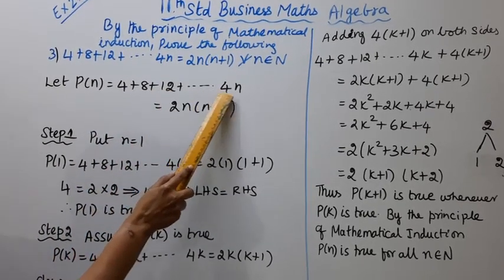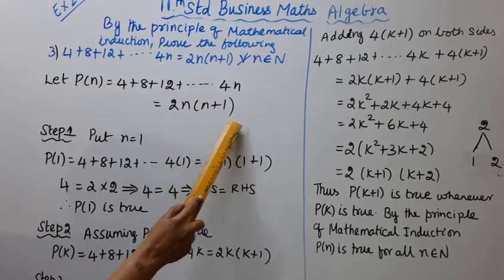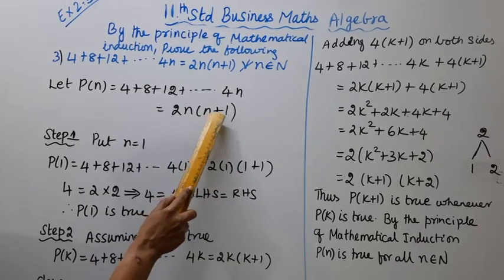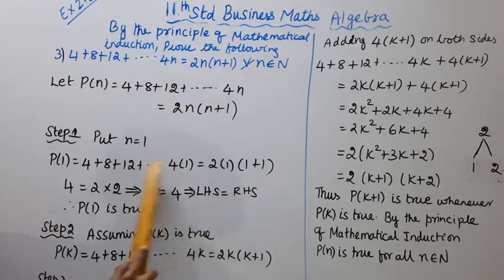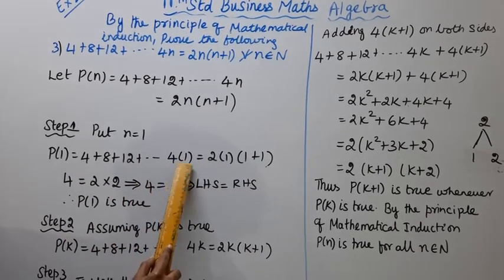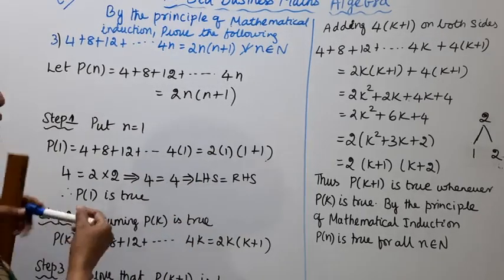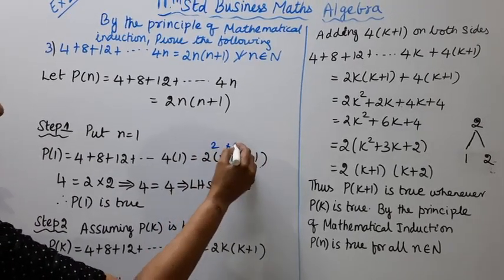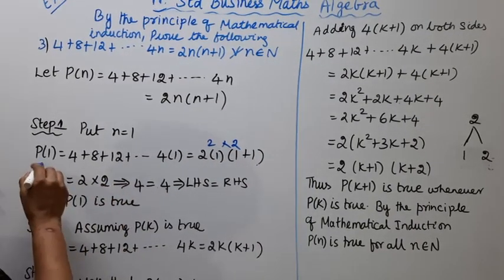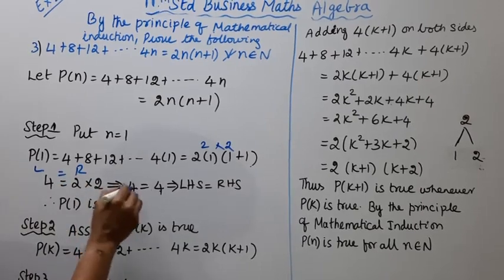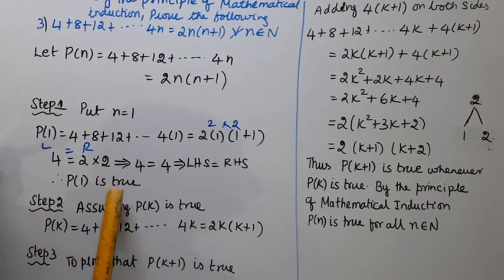4 + 8 + 12 + ... Left hand side is 4 × 1 = 4. Right hand side is 2(1)(1 + 1) = 2 × 2 = 4. Left hand side equals right hand side, so P(1) is true.